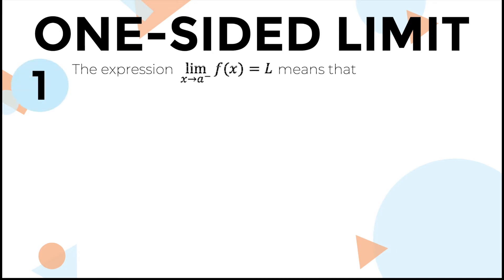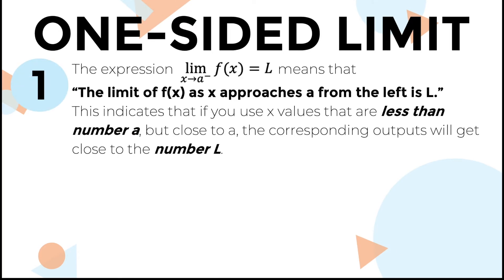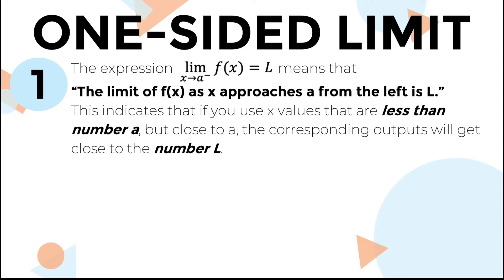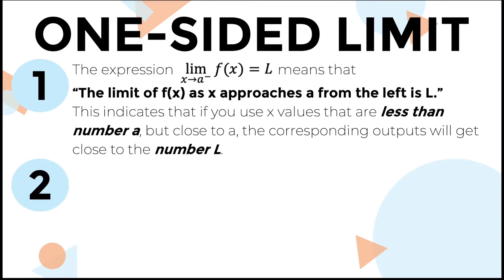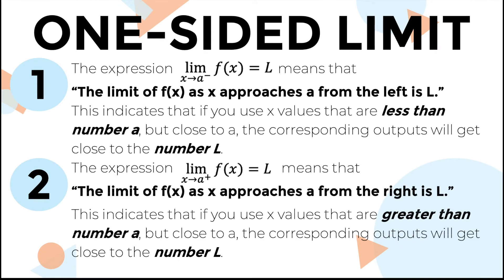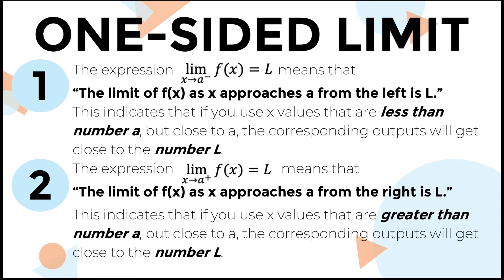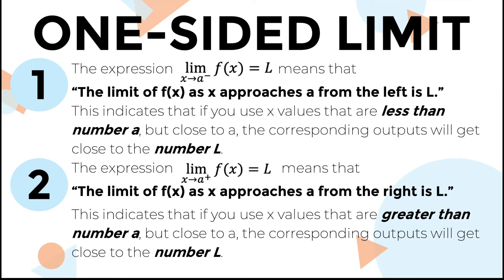This expression means that the limit of f(x) as x approaches A from the left is L. This indicates that if you use x values that are less than number A but close to A, the corresponding outputs will get close to the number L. This expression means that the limit of f(x) as x approaches A from the right is L. This indicates that if you use x values that are greater than number A but close to A, the corresponding outputs will get close to the number L.